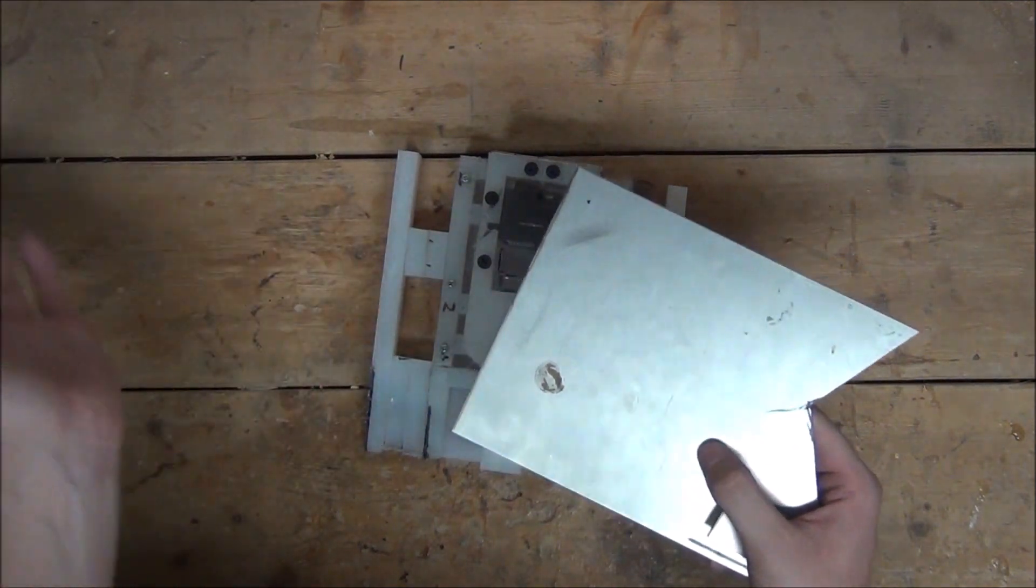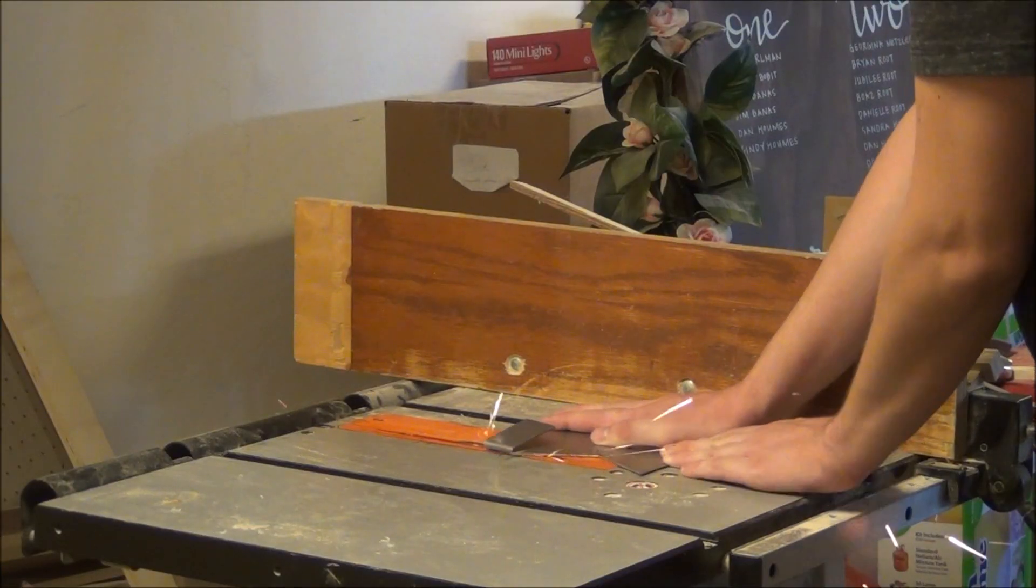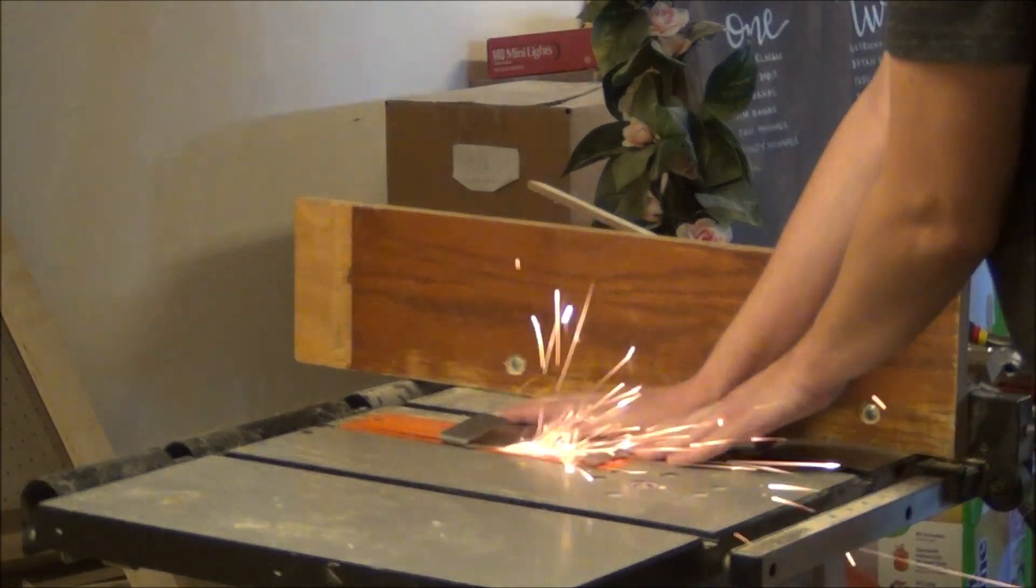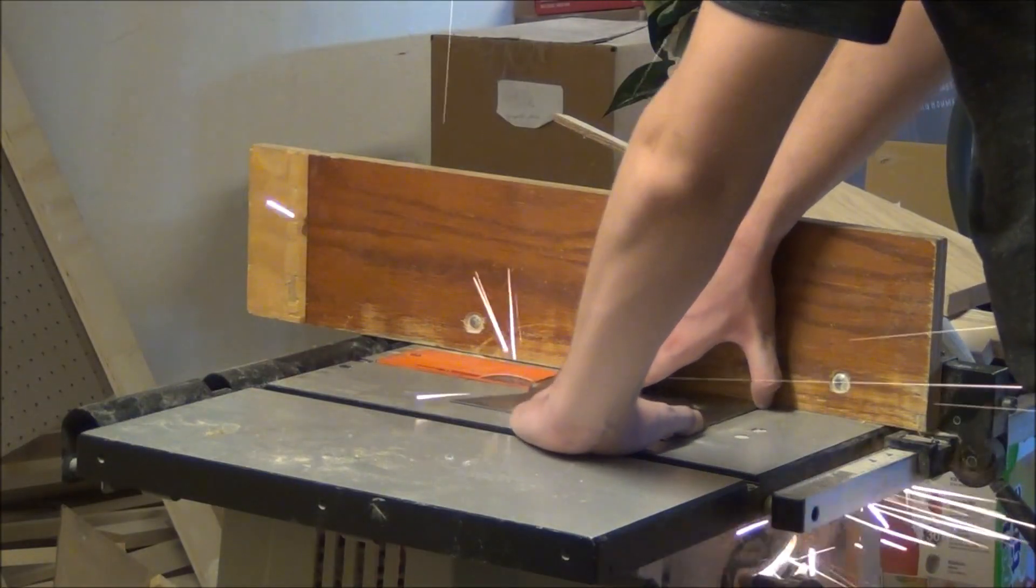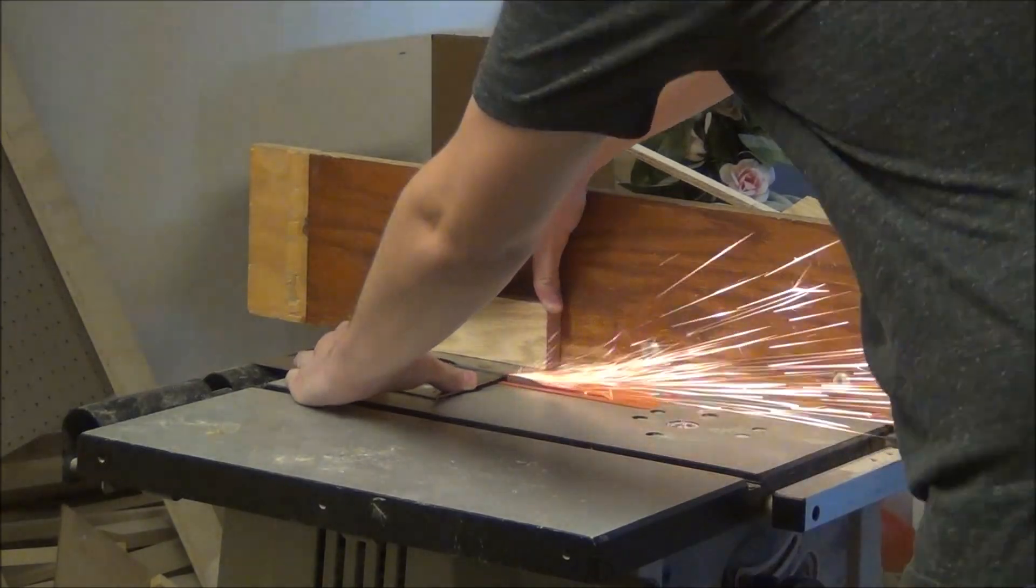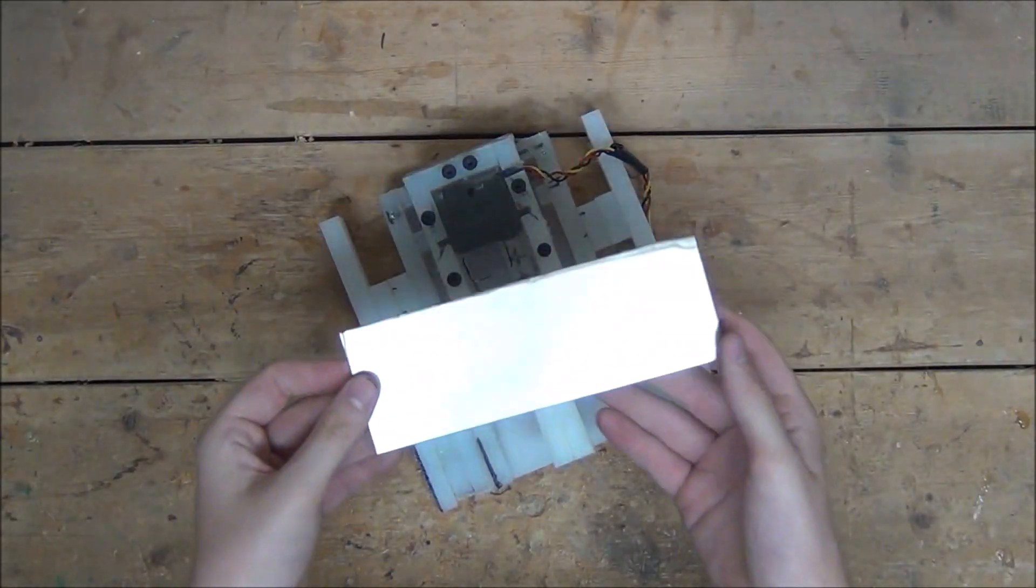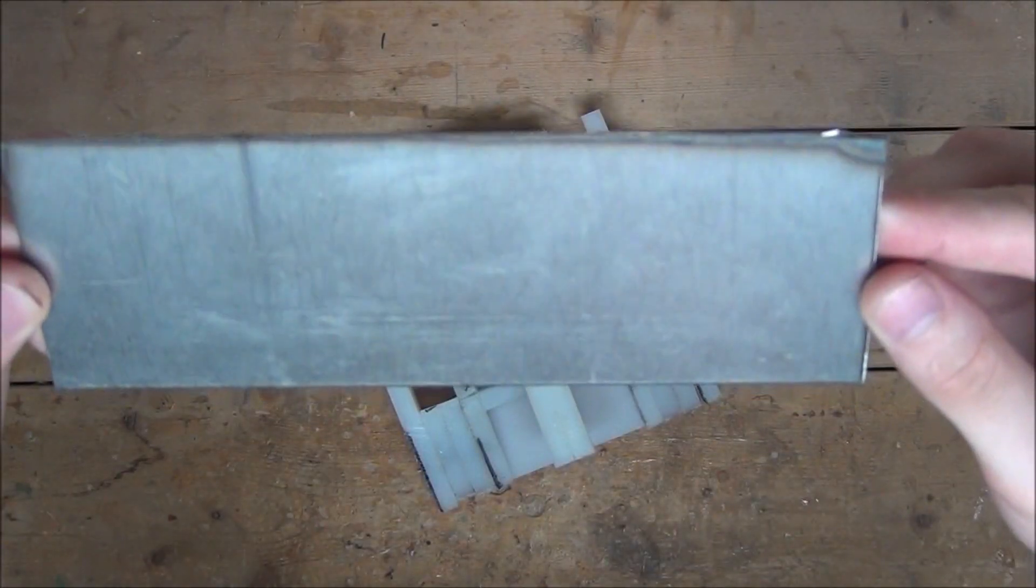I have the metal cutting blade already on the table saw, so let the sparks fly. There we go. That looks pretty good. I mean, this burn mark makes it look like it's not square, but it is.